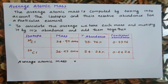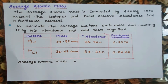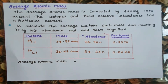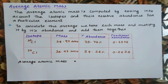Carbon has 3 isotopes: C-12, C-13, and C-14. Similarly, hydrogen has 3 isotopes: H-1 (protium), deuterium, and tritium. These isotopes are used to determine the average atomic mass of an element.